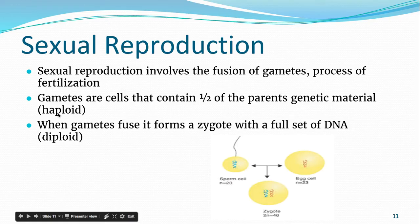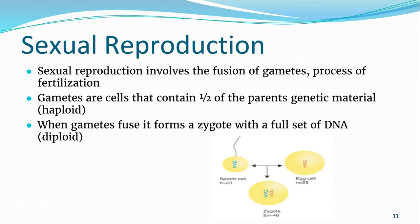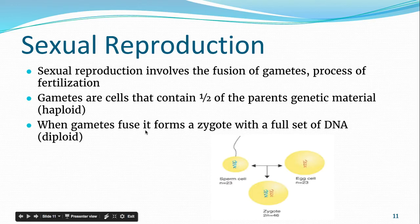Each gamete has half the parent's genetic material — in other words, they are haploid. For instance, humans under normal circumstances have 46 chromosomes. A haploid cell has 23, which is half of 46. When two gametes fuse, you form a zygote with a full set — two halves make one whole — and this is called diploid. It has two sets: two sets of 23 chromosomes for us makes 46 total.